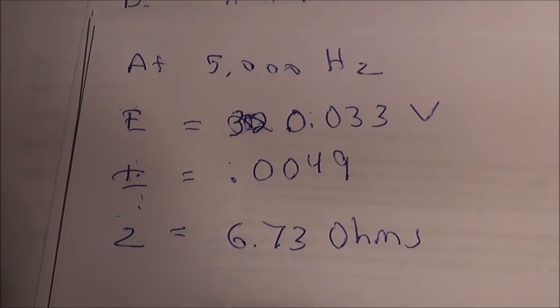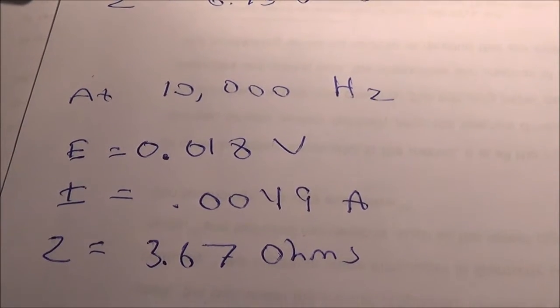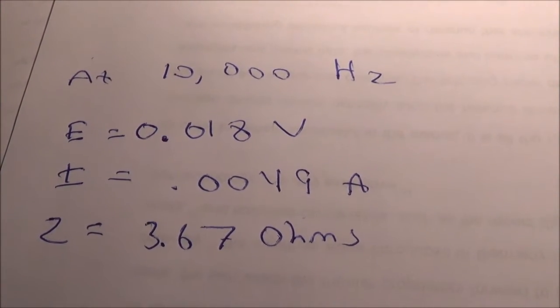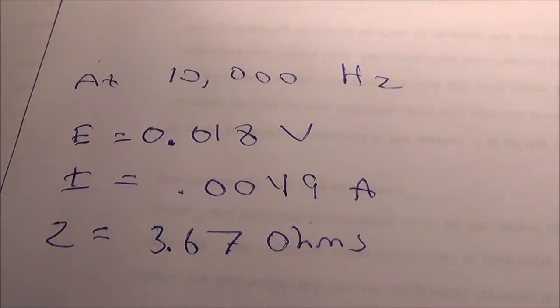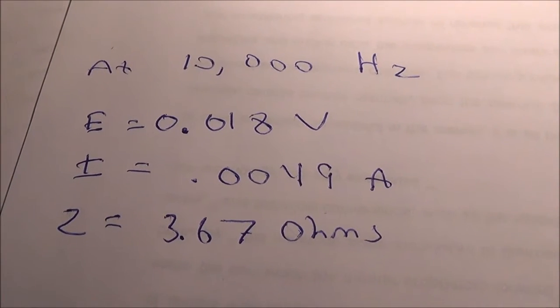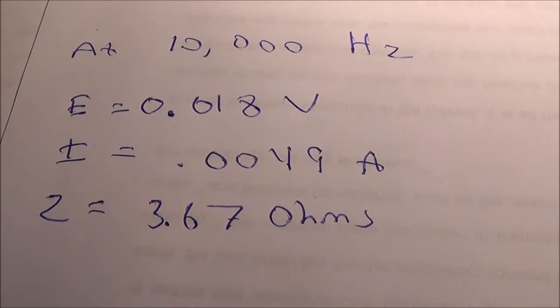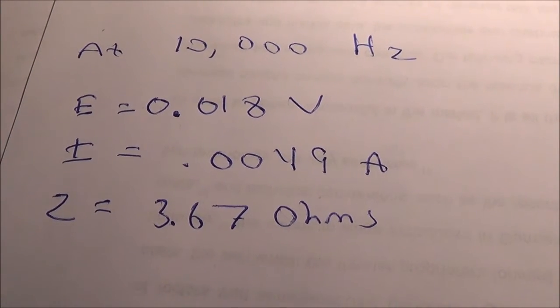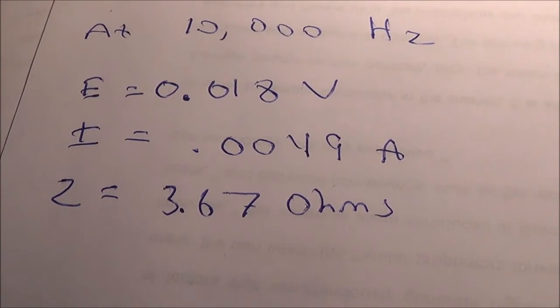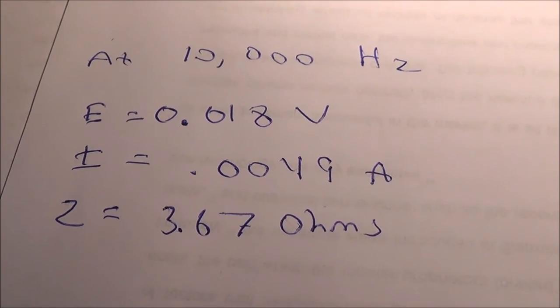Here's my math for 10,000 Hz. It came out to 0.018 volts AC and the current is 0.0049 amperes. After doing the math using my formula Z equals E over I, it came out to 3.67 ohms at 10,000 Hz.